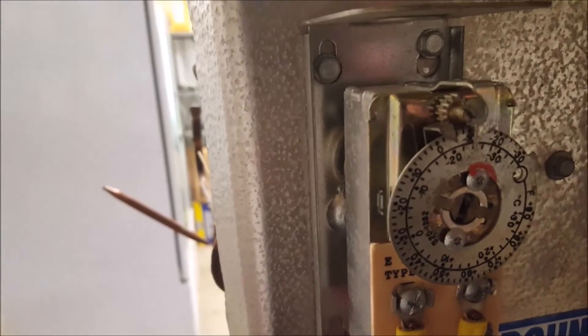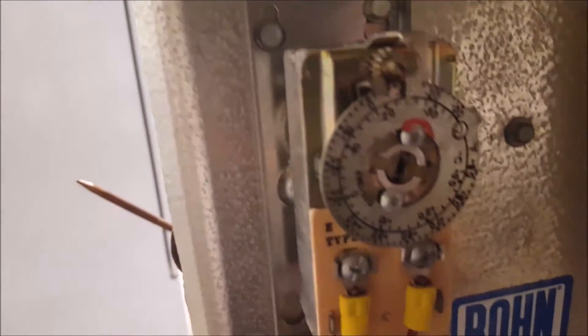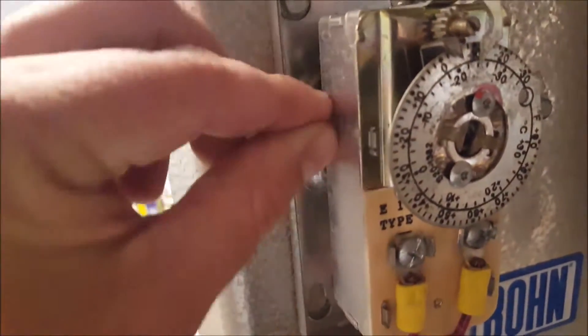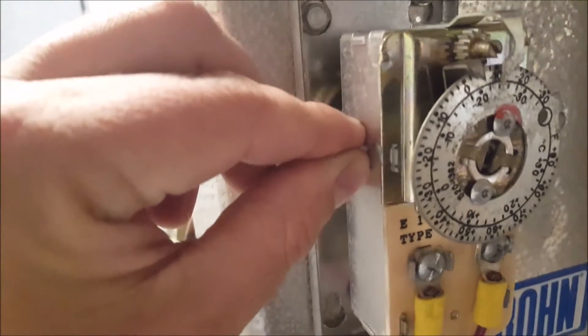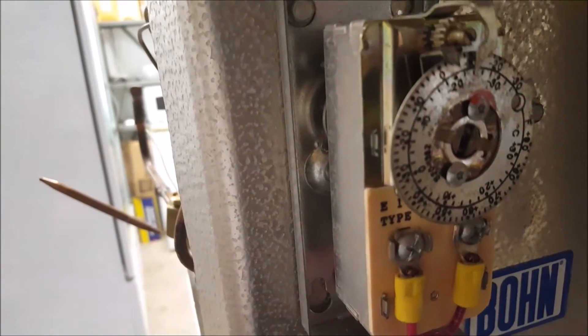Other thermostats have a little slide on the side of it with the words minimum and so forth, and that's your differential setting there. So minimum is going to give you somewhere around five or six degrees differential.